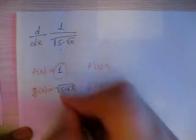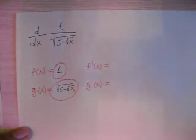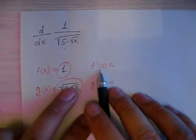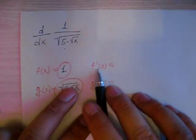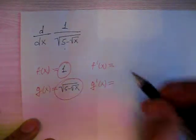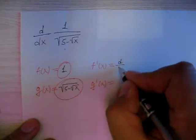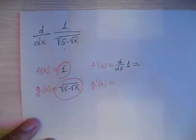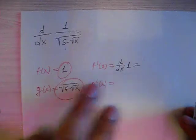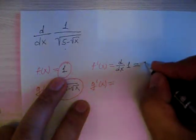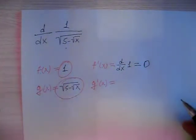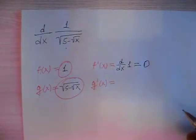What is f'(x)? f'(x) is the derivative of f(x), so it's the derivative of 1. The derivative of 1 is 0, because 1 is a constant number, and the derivative of a constant is always 0.